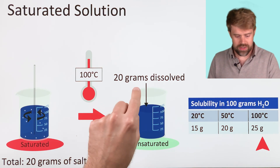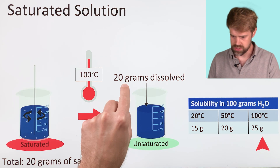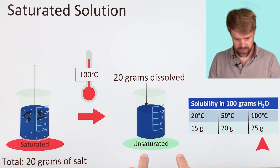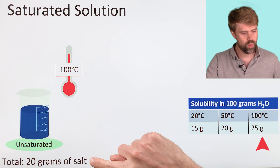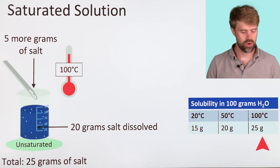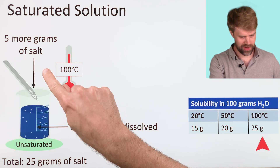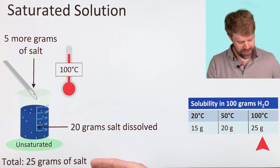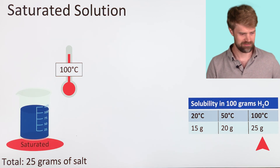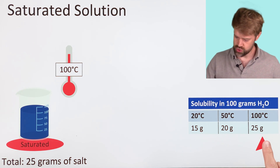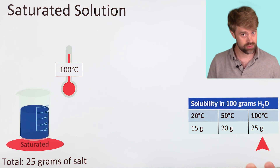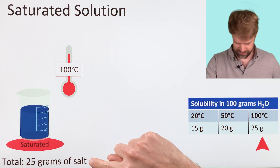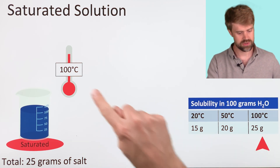We have 20 grams of salt dissolved in the water at 100 degrees Celsius, but it could hold 25. Now we're going to add 5 more grams of salt. That's 20 grams already dissolved, so we have 25 total grams in the beaker. Because our solubility is 25 grams of salt at 100 degrees Celsius, we have again created a saturated solution — 25 grams dissolved, 25 grams is the maximum, at 100 degrees.